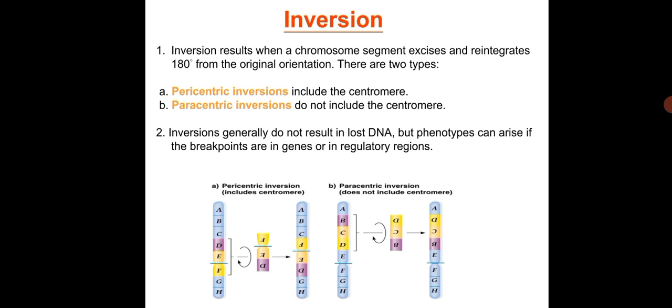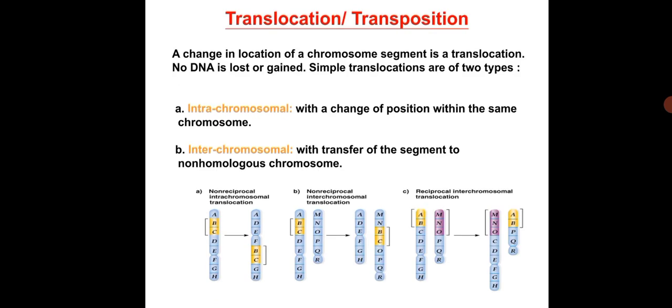Inversion is the form of mutation in which part of a chromosomal segment excises and reintegrates 180 degrees from the original orientation. It is of two types: pericentric inversion, in which the segment undergoing inversion includes a centromere, and paracentric inversion, in which the segment does not include a centromere. Inversions generally do not result in lost DNA, but the phenotype can be altered if the break points are in regulatory regions.